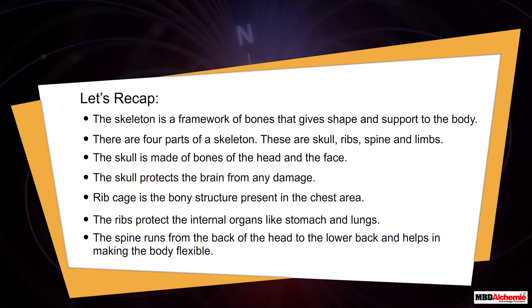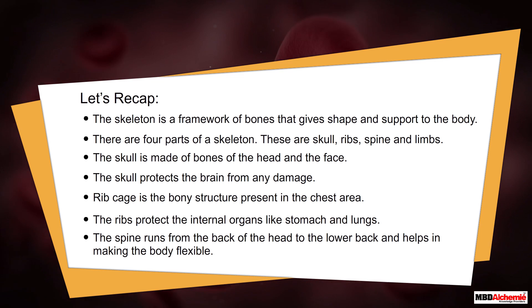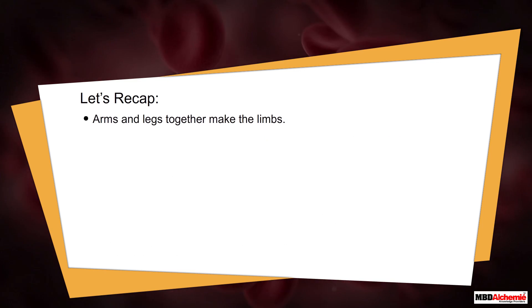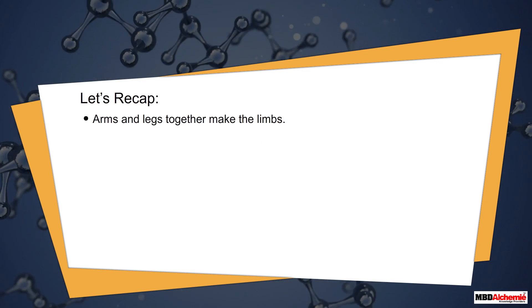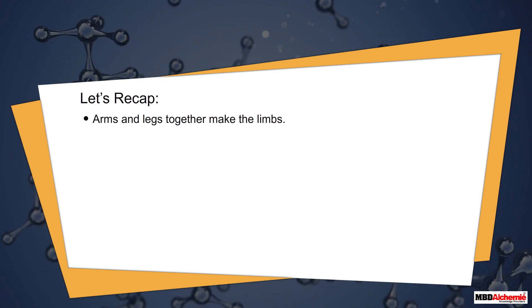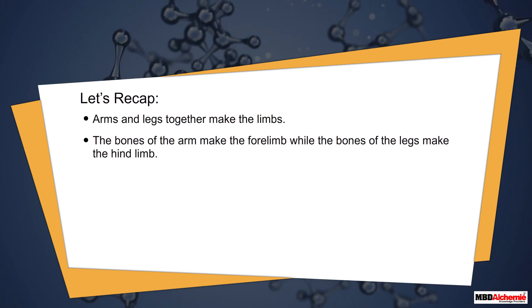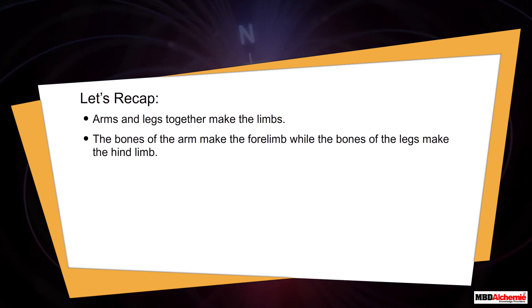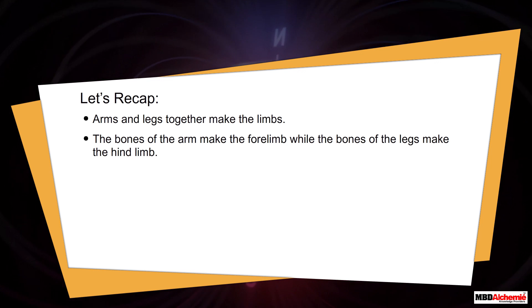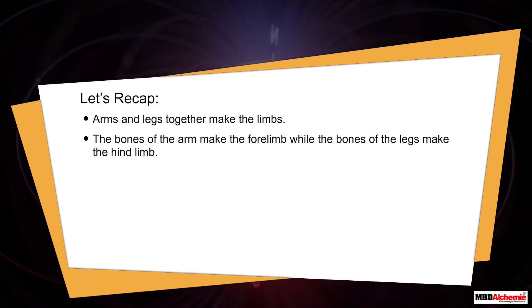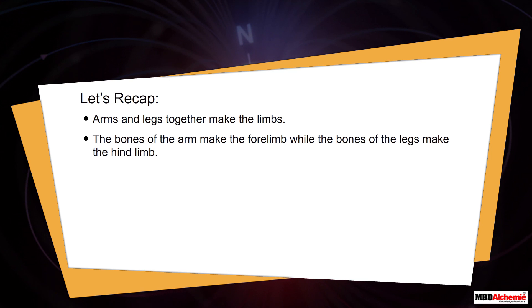The spine runs from the back of the head to the lower back and helps in making the body flexible. Arms and legs together make the limbs. The bones of the arm make the forelimbs, while the bones of the legs make the hind limbs.